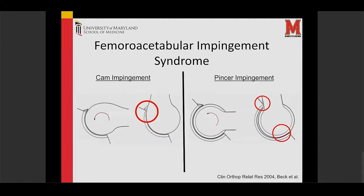This is what FAI is. The CAM is the extra bump of bone — instead of curving in, it sticks out and goes straighter down. This is abnormal bone. When the hip flexes up, that extra bone hits the edge of the acetabulum and the labrum. It pinches that area, and it also hits the cartilage. The problem is it causes a tear in between the cartilage and the labrum. The labrum provides a seal to keep everything in continuity, so when you disrupt between the cartilage and the labrum, you lose that seal — potentially a big problem for the hip.